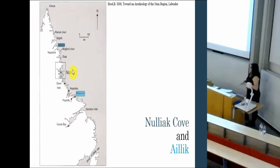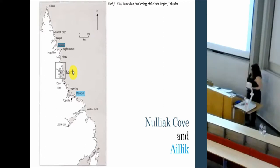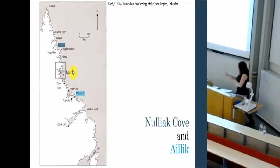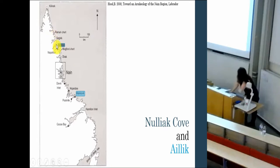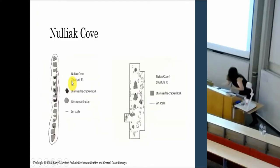The two sites I'll focus on are very well known in the longhouses debate, which is really what I want to talk about. They are known because of their size and because they have longhouses — quite monumental structures built by nomadic people, which is more common in Europe but less so in North America. The two sites are Nulia Cove, situated near Uivak Fjord up in Labrador near the Ramah quarry, and Aillik, near the Makkovik town.